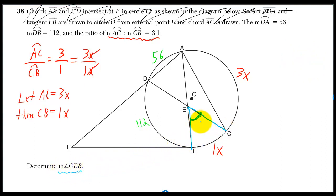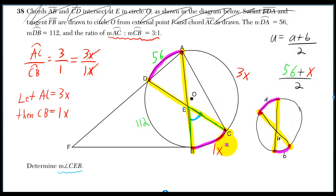Now they want to know CEB. That's this angle over here. Whenever you have an angle formed by the intersection of two chords, it's equal to the average of the intercepted arcs. There's our intersecting chords and there's the intercepted arcs. So we need to take the average of 56 and X, which means we need to know X.